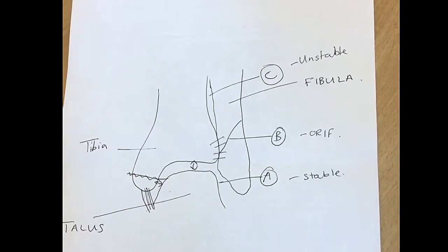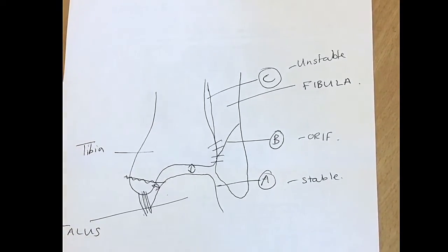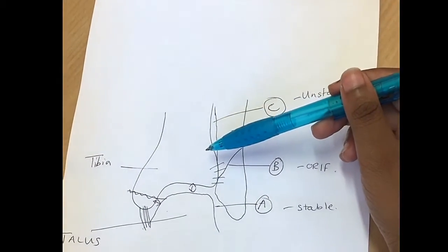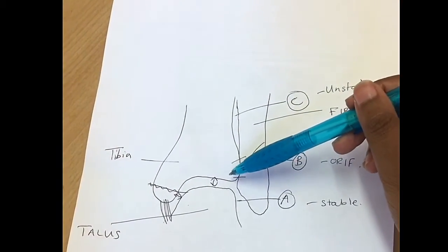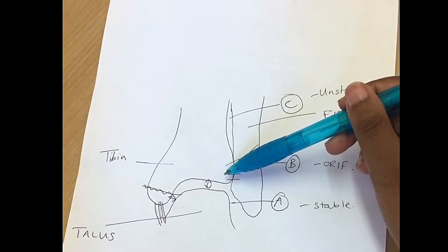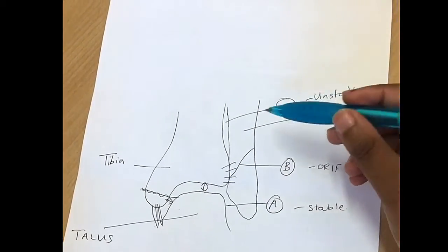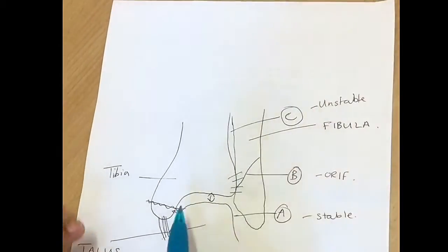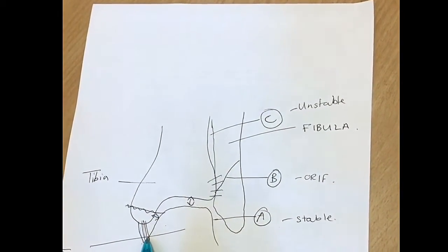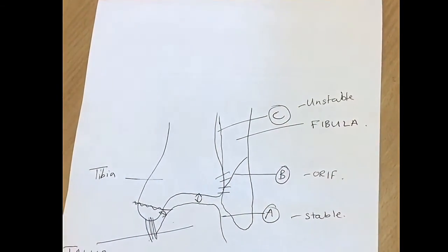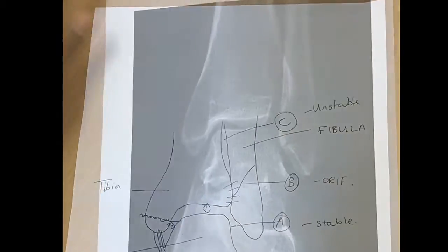The Weber C fracture is unstable and usually requires ORIF — open reduction and internal fixation. The syndesmosis is usually also disrupted, making it a very unstable fracture. You have a disrupted syndesmosis, a medial malleolus fracture, and deltoid ligament injury — it's just chaos.